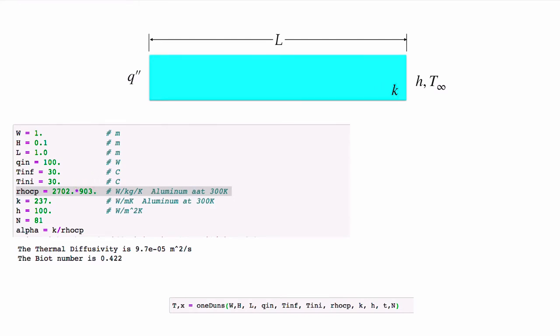I've put in 100 watts into the bar at x=0, taken it to be 1 meter into the screen, 0.1 meters in height, and 1 meter in length — a fairly substantial piece of aluminum. I've used the properties of aluminum: volumetric heat capacity from density times heat capacity per unit mass, and conductivity evaluated at 300 K, which is approximately our initial temperature. I'm using 81 control volumes. This gives a thermal diffusivity of 9.7×10⁻⁵ m²/s and a Biot number of 0.422 — well above the lumped capacitance threshold, so we expect significant temperature variations within the bar.